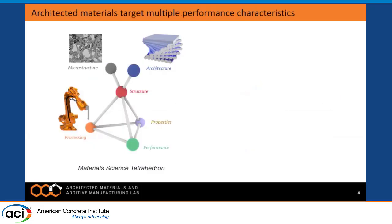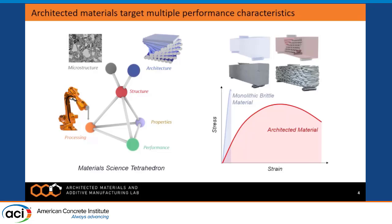Our goal with these architectures is to develop an architected material. Architecture refers to the arrangement of different phases or materials within the bulk composite, which is different from the microstructure. This arises from the processing methods of fabrication or how the organism grows, and it determines the overall properties and performance of the material. Whereas conventional monolithic brittle materials like glass or stone show a brittle response, we're targeting multiple performance characteristics — both strength and toughness.